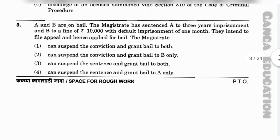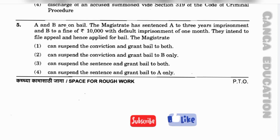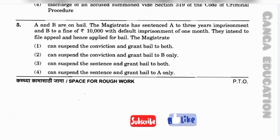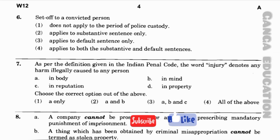Question number 5: A and B are on bail. The magistrate has sentenced A to three years imprisonment and B to a fine of rupees 10,000 with default imprisonment of one month. They intend to file an appeal and applied for bail. The magistrate: option 1 — can suspend the conviction and grant bail to both; option 2 — can suspend the conviction and grant bail to B only; option 3 — can suspend the sentence and grant bail to both; option 4 — can suspend the sentence and grant bail to A only. The correct answer is option 3 — can suspend the sentence and grant bail to both.